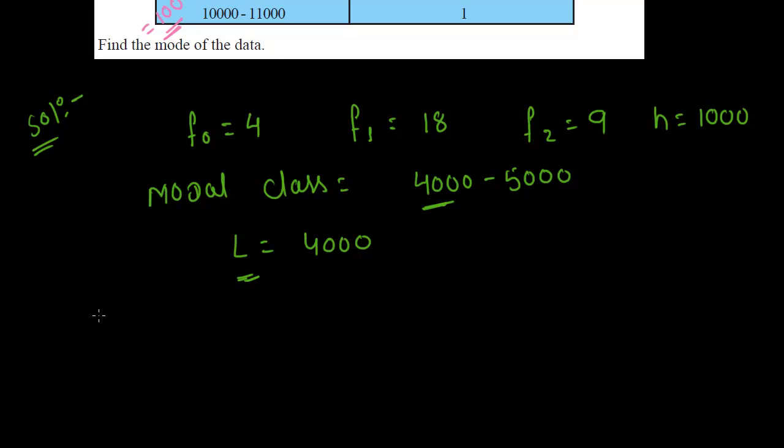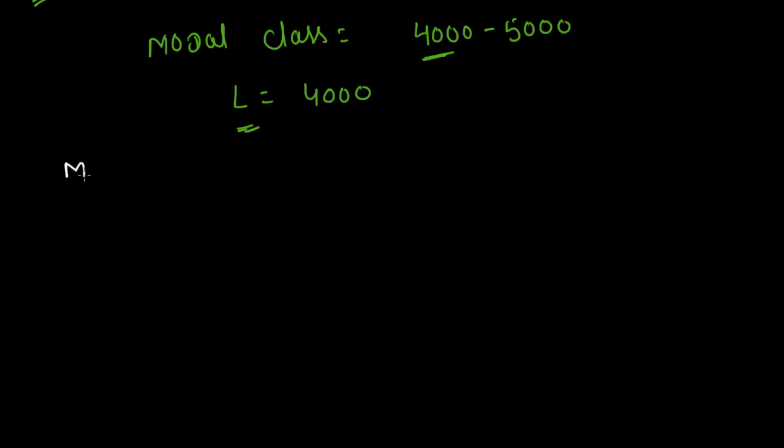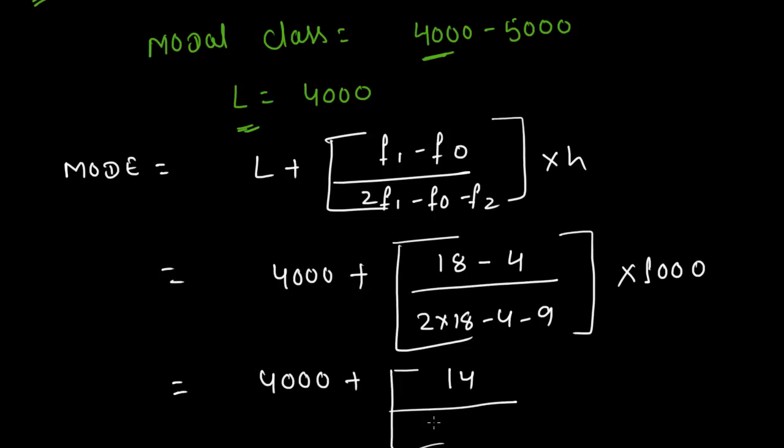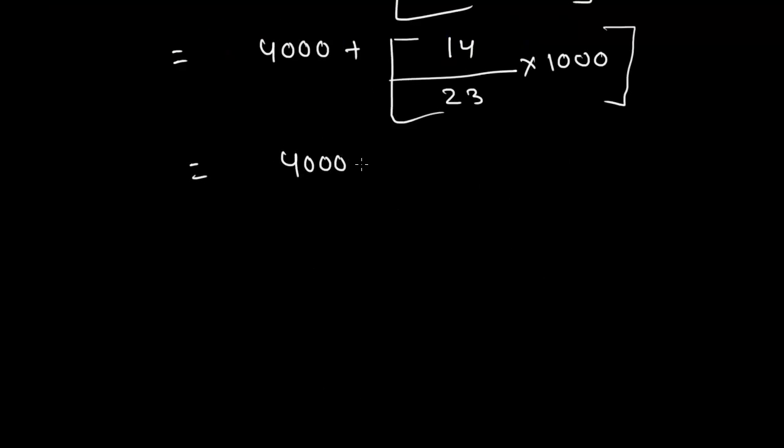Now we know that mode is equal to L plus F1 minus F0 divided by 2F1 minus F0 minus F2 into H. This is equal to 4000 plus 18 minus 4 divided by 2 into 18 minus 4 minus 9 into 1000, which is equal to 4000 plus 14 upon 23 into 1000.